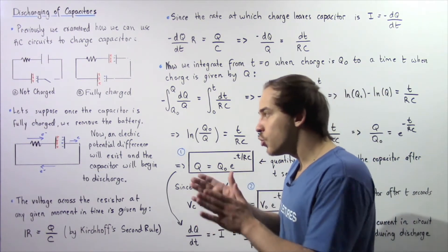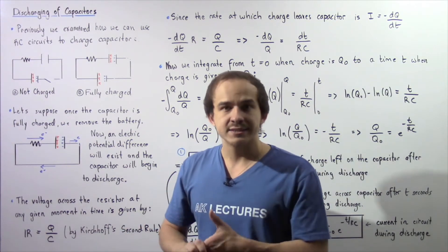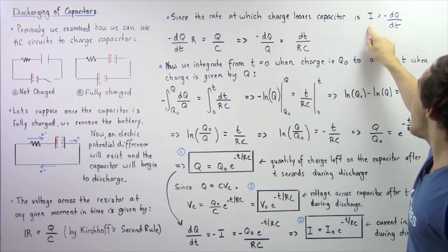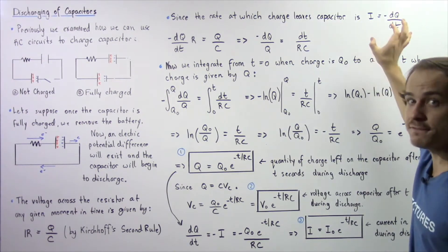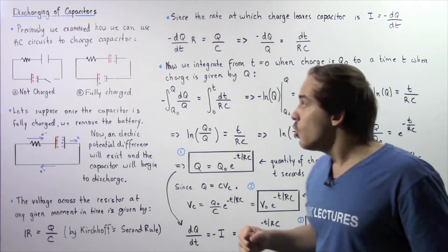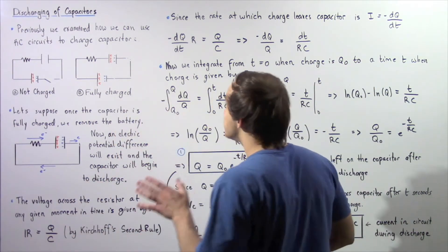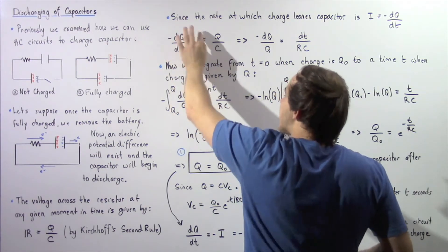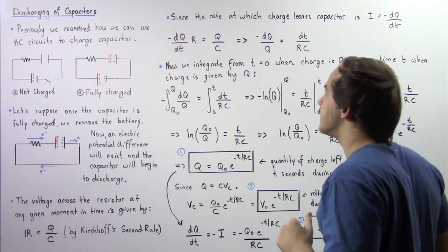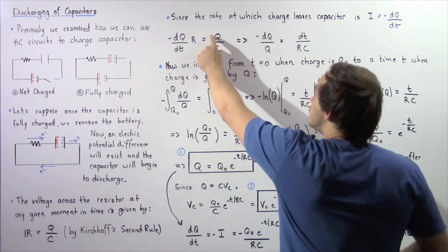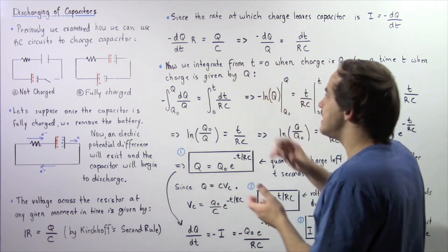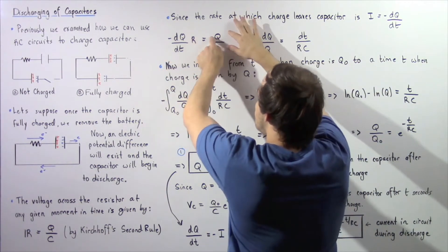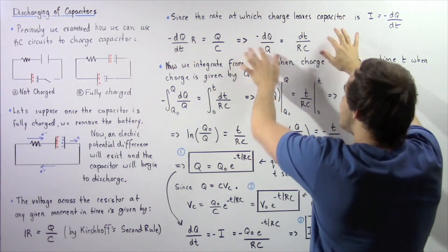So let's develop an equation for voltage and charge with respect to time. Since the rate at which charge leaves our capacitor is given by I = −dQ/dt, by definition of instantaneous current, we can replace I in our equation with −dQ/dt. So −dQ/dt multiplied by R equals Q divided by C, where Q is the quantity of charge and C is the capacitance. Rearranging and bringing the Q's to one side and everything else to the other, we get: −dQ/Q = dT/RC.